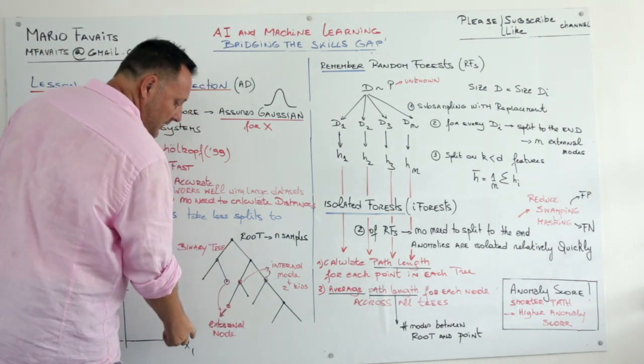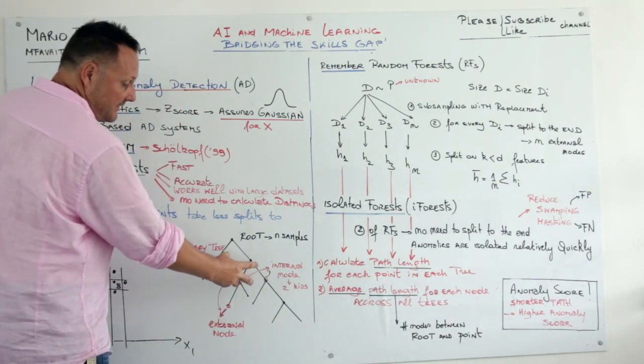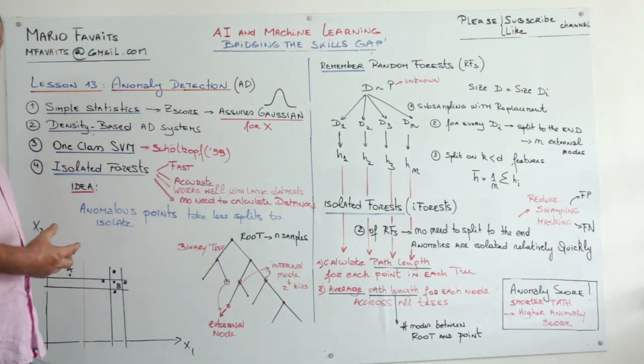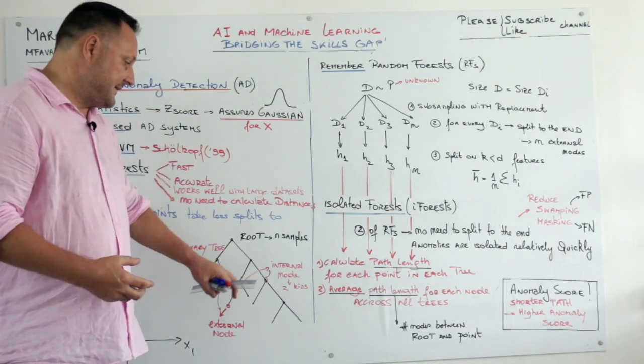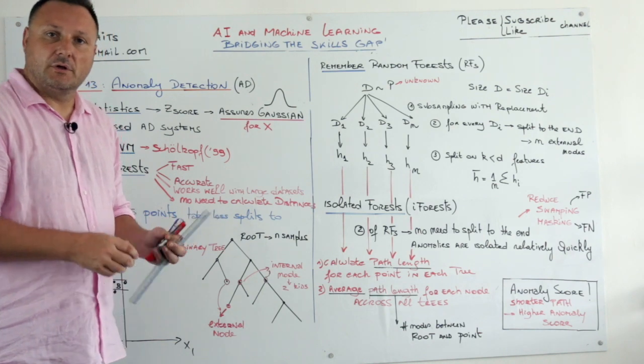The nodes at the end we call external nodes, and all the other nodes we call internal nodes. So there's N external nodes and there is N-1 internal nodes.